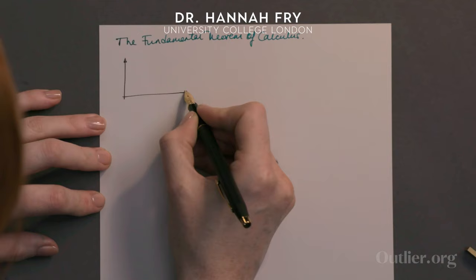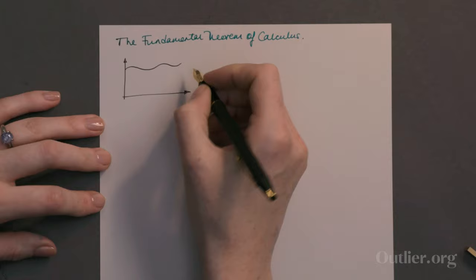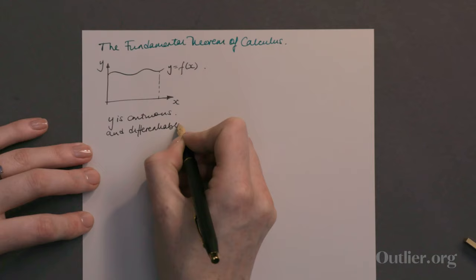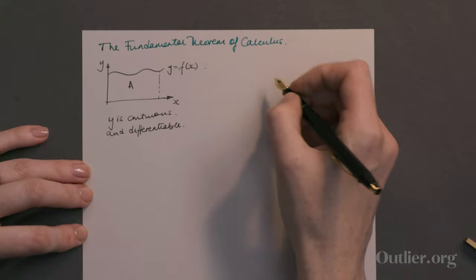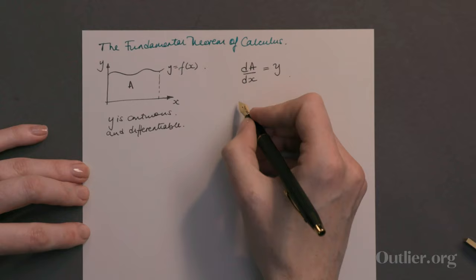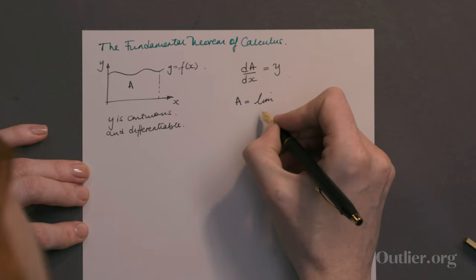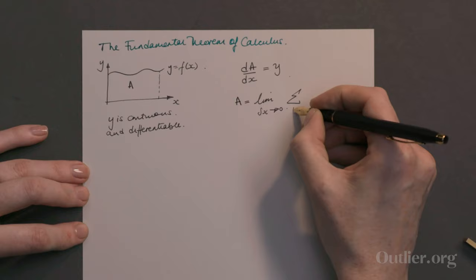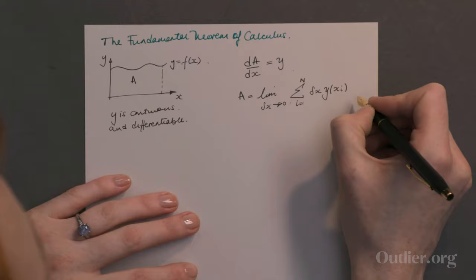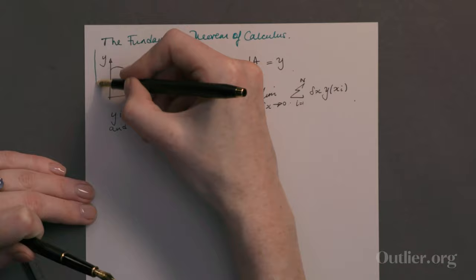So it essentially says you have some function y equal to f of x, and y is continuous and differentiable — so you can draw it without taking your pen off the page and there are no sharp corners or edges. Then you have this area under a curve, A, and the fundamental theorem of calculus says that the derivative of A with respect to x is equal to y.